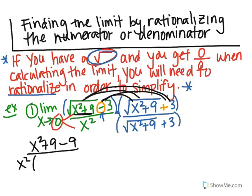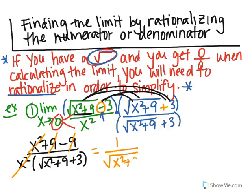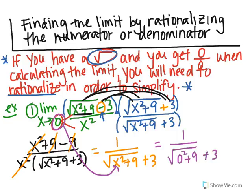This is all over x squared times the square root of x squared plus 9, plus 3. Conveniently, the 9s cancel, and the x squareds also cancel. I'm basically left with 1 in the numerator, and the square root of x squared plus 9, plus 3 in the denominator. Plugging in 0, I get 1 over the square root of 9 plus 3, which is 1 over 6. So the limit is 1 sixth.